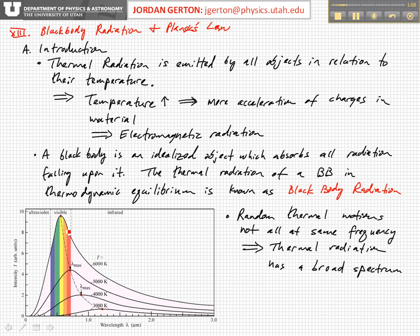Here are some temperatures of black bodies in between. There is a very well-defined peak in the thermal radiation spectrum — the black body spectrum. The peak depends on the temperature and it shifts to longer wavelengths as we go to lower temperatures.